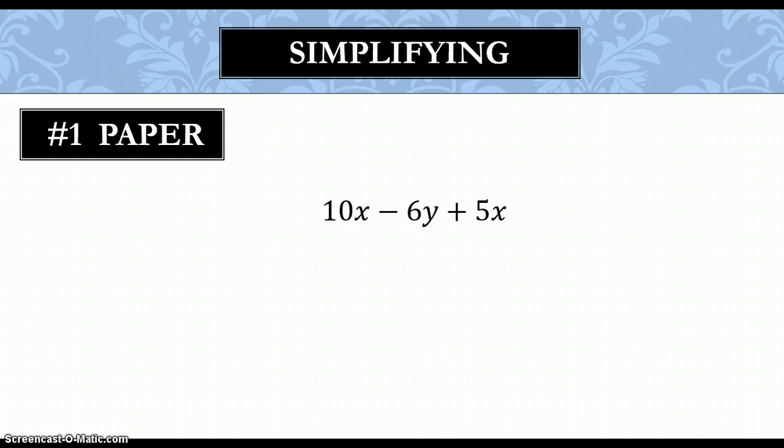This type of problem is one where we can only simplify. We know that we can only simplify and not solve because this problem does not have an equal sign. To simplify, we need to combine our like terms. And again, to combine like terms, you're looking at either numbers or terms that have the same variables that are raised to the same power.